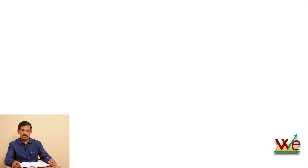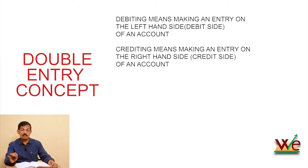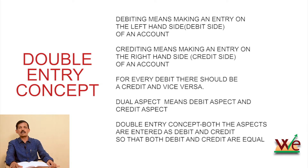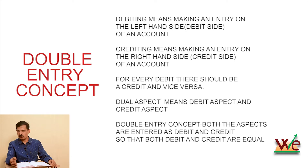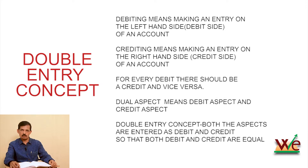So what is the important concept here? Every transaction has two aspects — one debit aspect and one credit aspect. The debit aspect is the left-hand side account, and the credit aspect is the right-hand side account. For each transaction, the total of the debit will be equal to the credit. This concept is the dual aspect concept, also known as the double entry concept.